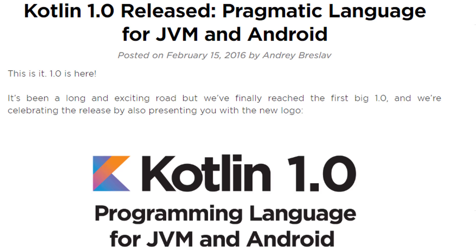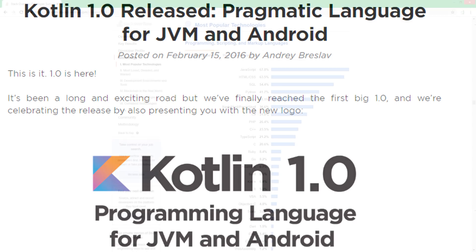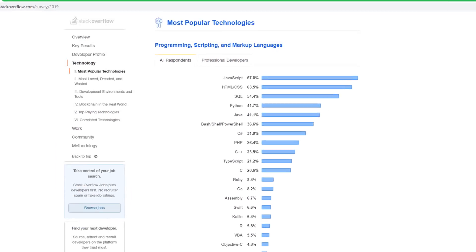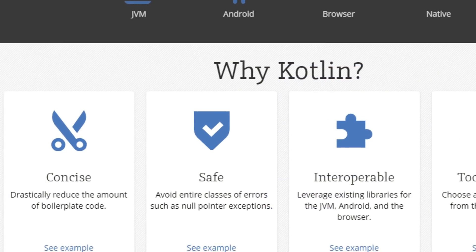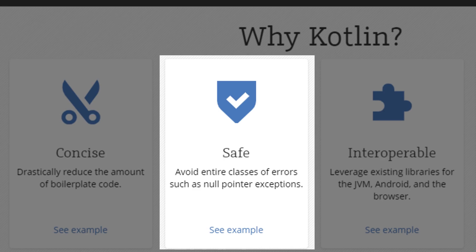It improves upon a lot of the pain points and bad design decisions in the Java language that turned out to be the most annoying over the last more than 20 years. This doesn't mean Java is obsolete — in fact, it's still one of the most widely used languages to this date, and it won't disappear anytime soon, but the developers had a lot of time to learn what could be done better. A very popular example that you might have already heard of is how both languages handle so-called null values.